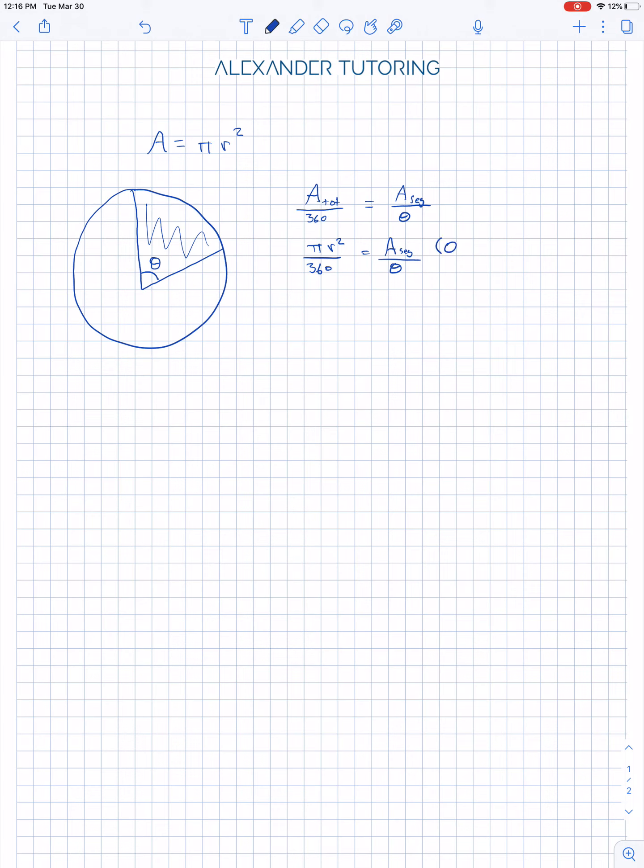Now all we have to do is multiply both sides by theta. And there you have it, the area of the segment equals pi r squared over 360, making sure everything's in degrees, times the angle theta subtended by the segment.